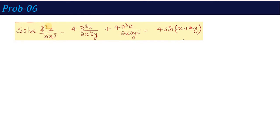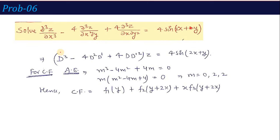The next problem is: solve d³z/dx³ - 4d³z/dx²dy + 4d³z/dxdy² = 4sin(2x+y). This is a homogeneous equation since all derivative orders are the same, and the right-hand side is in the AX plus BY form. Converting to operator form: (D³ - 4D²D' + 4DD'²)z = 4sin(2x+y).